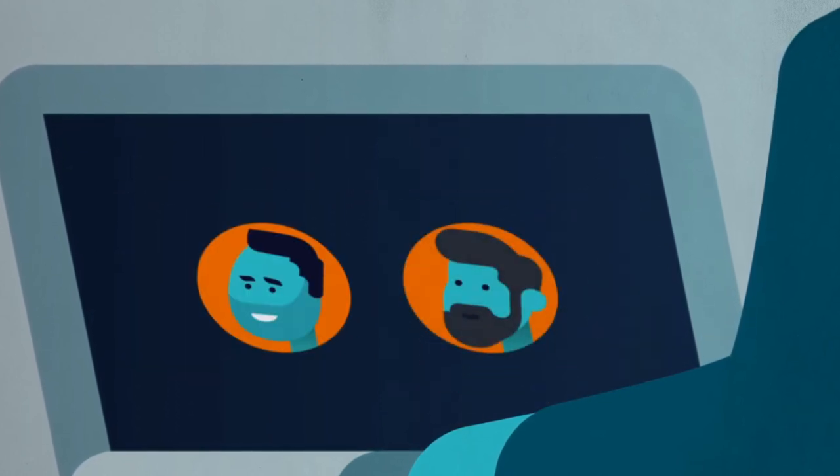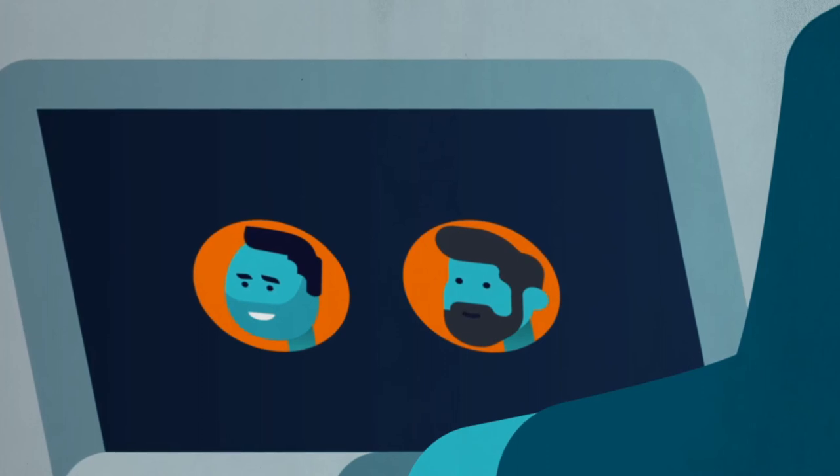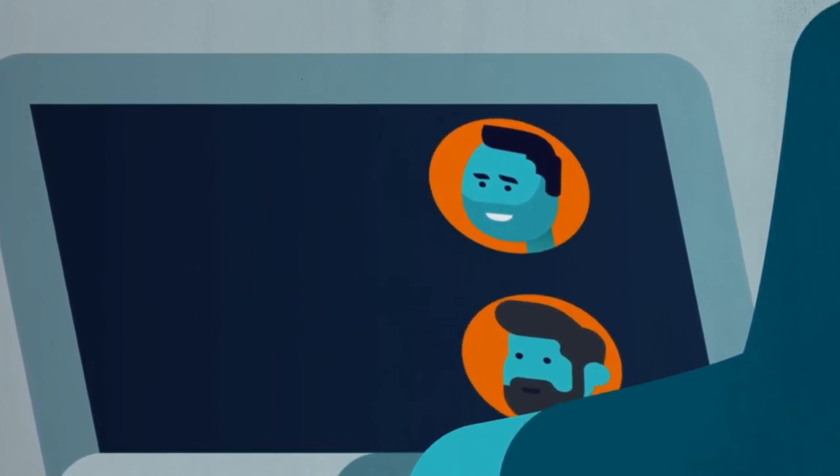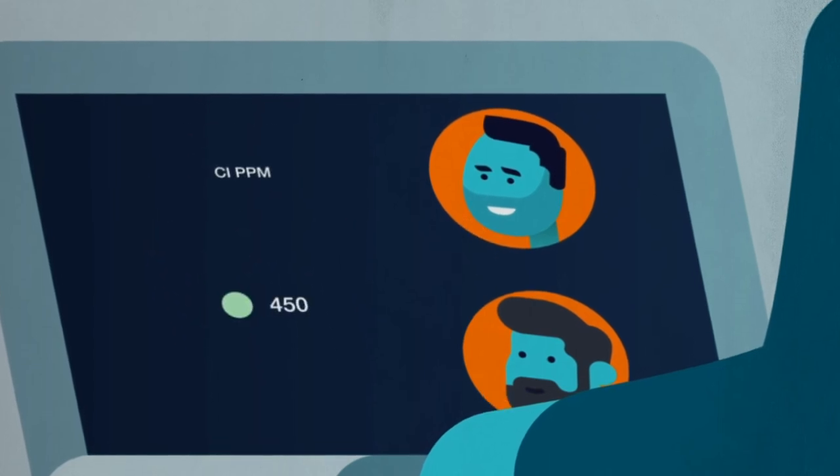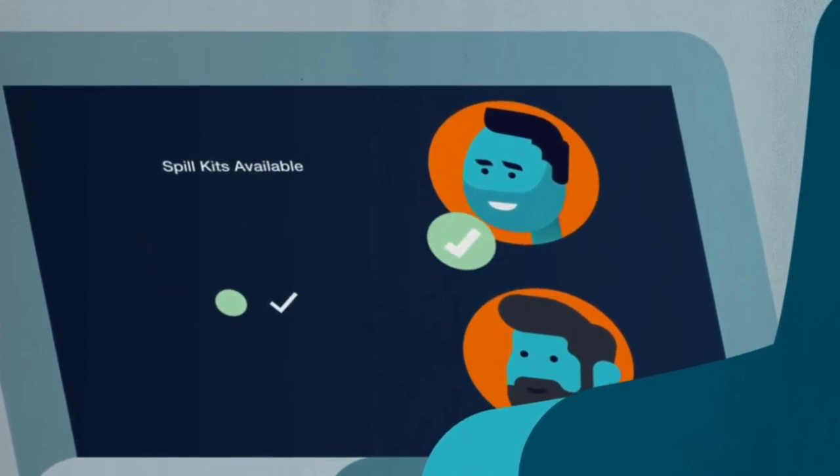But most importantly, Ali and John can ensure the safety and integrity of their pipeline operations. The team has complete visibility of their company KPIs and they can see the true condition of their pipelines.